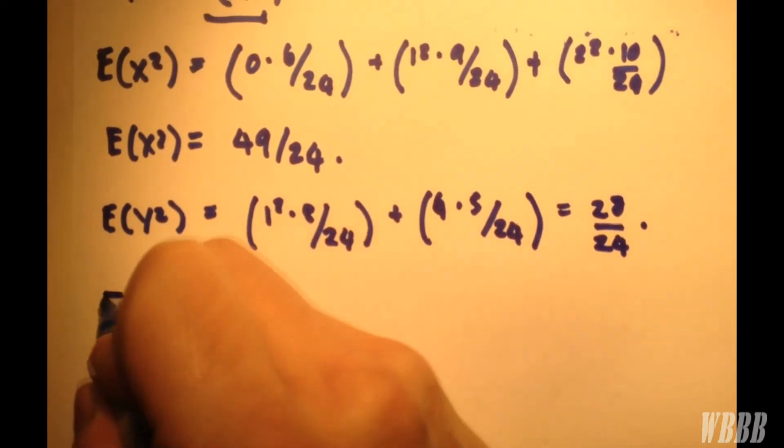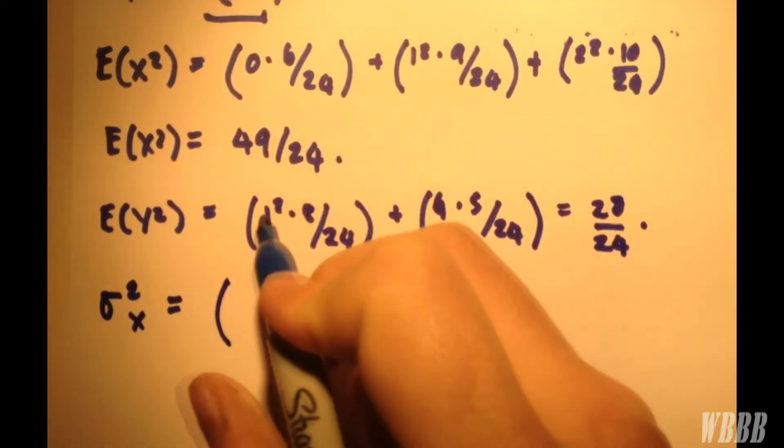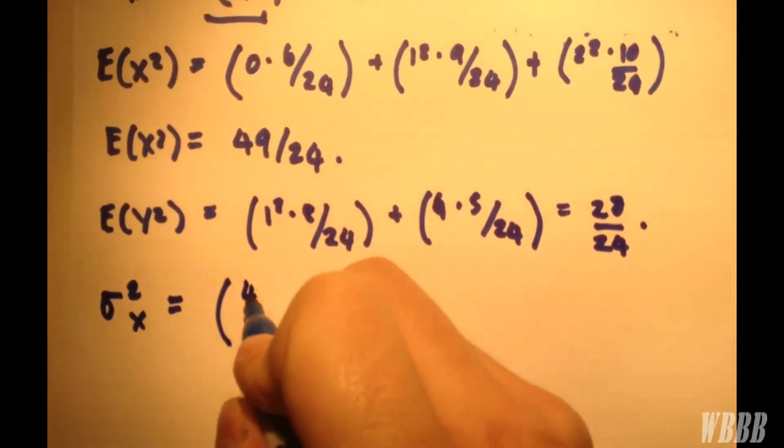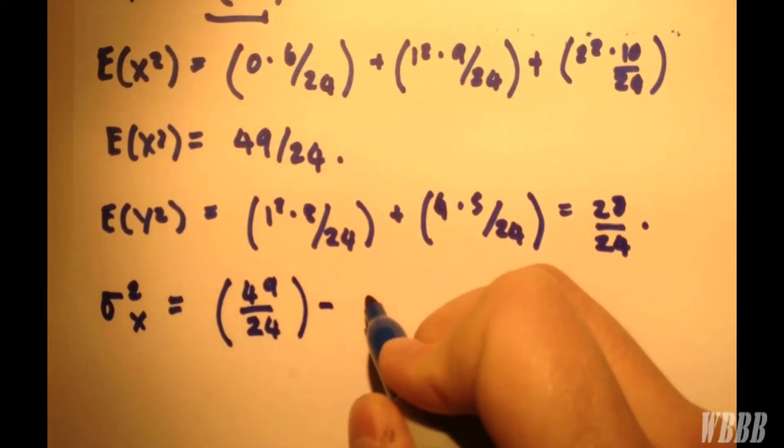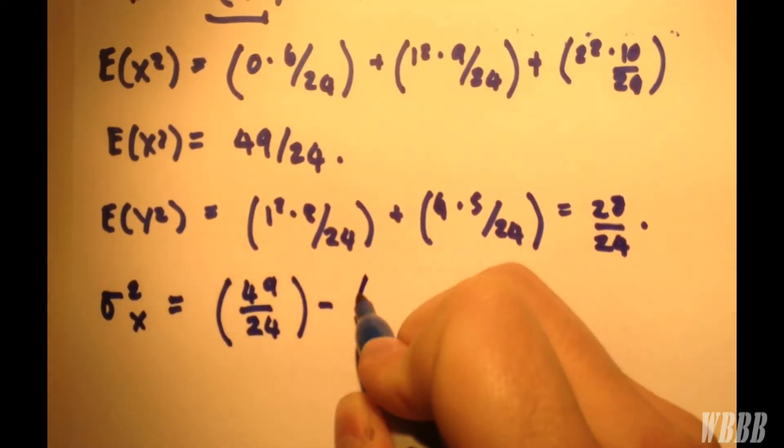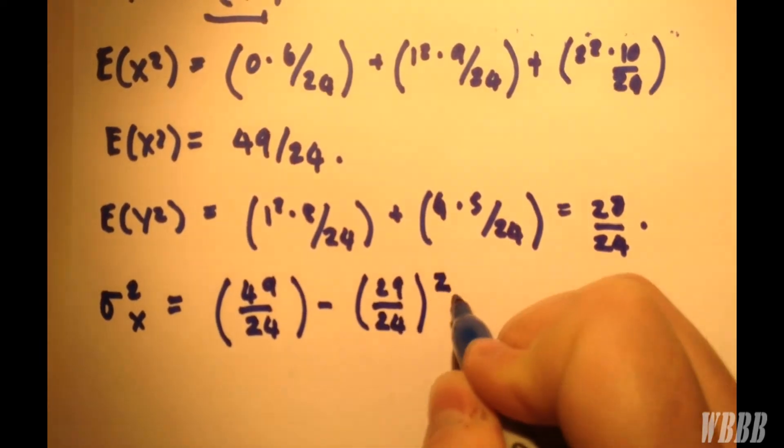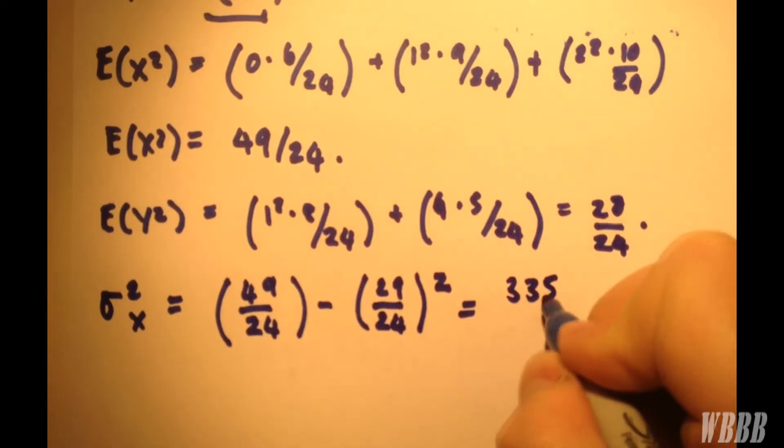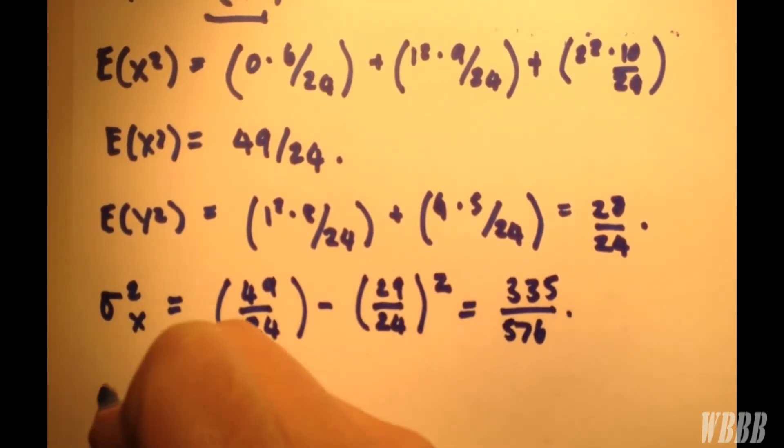So now we can calculate our variances, which is equal to the expected value of X squared, 49/24, minus the expected value of X all squared, which is 29/24 all squared. And that gives, not very lovely, 335/576.